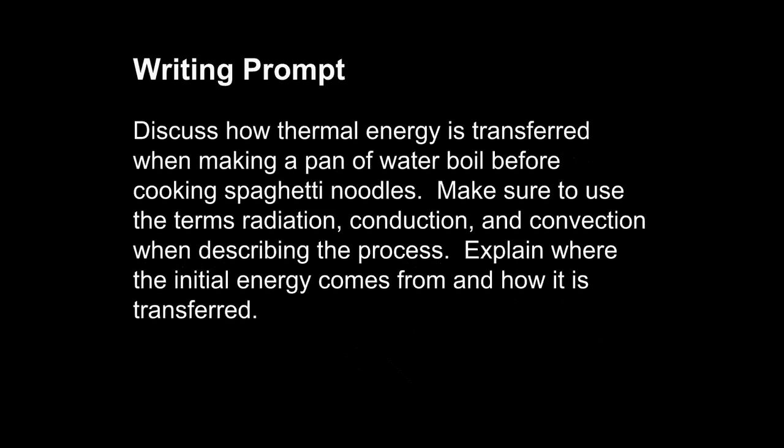This first writing prompt comes from a seventh grade science writing. It is not a reflection on a lab; rather, it discusses a concept that the student is learning. Let's read it: Discuss how thermal energy is transferred when making a pan of water boil before cooking spaghetti noodles. Make sure to use the terms radiation, conduction, and convection when describing the process. Explain where the initial energy comes from and how it is transferred. First, you must read and size up the writing prompt. We note this is a cause and effect writing prompt asking how a certain effect — the boiling of water — occurs. The teacher has given clues about the causal chain that leads to that effect: radiation, conduction, and convection. So the teacher has fairly clearly identified the steps of the causal chain for the student. We can use all of these clues to write an effective answer.